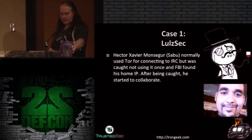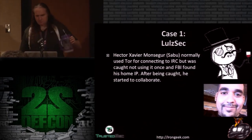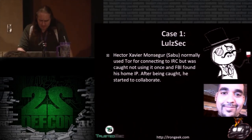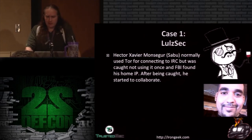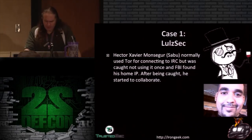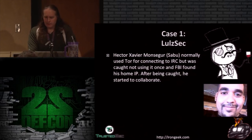Next case — Hector Xavier Monsegur, also known as Sabu, which is easier to remember. Normally he was using Tor to connect to the IRC network, so they wouldn't necessarily know his home IP. But one time he got lazy and didn't connect through Tor. So he got himself caught and started to collaborate because he really didn't want to go to jail. I think he got off completely in the end. But he didn't use Tor consistently, and eventually they found him. I don't understand why people doing these illegal acts don't use something like I2P, which has IRC built in and runs over an anonymous network.